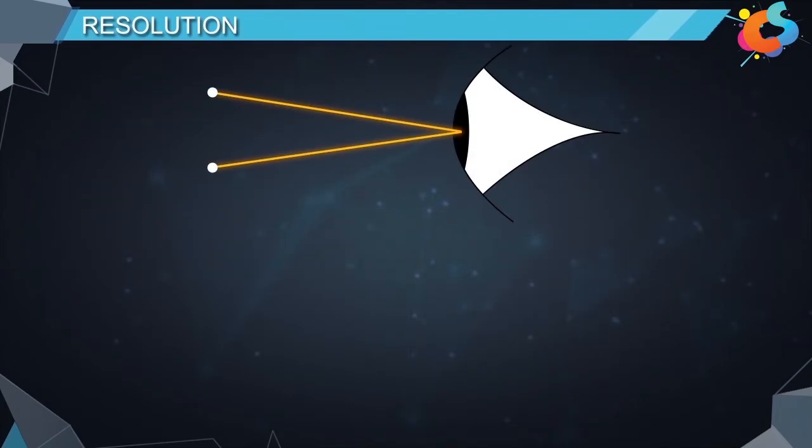In fact, the human eye can see two point objects separately only if the angle subtended by them at the eye is greater than 1 by 60th of a degree, or one minute.